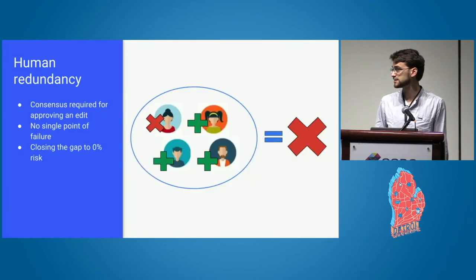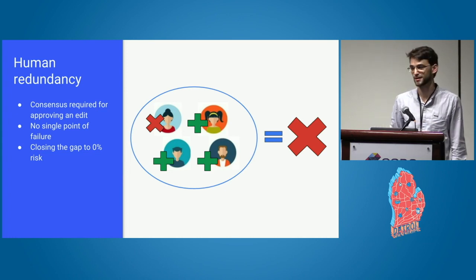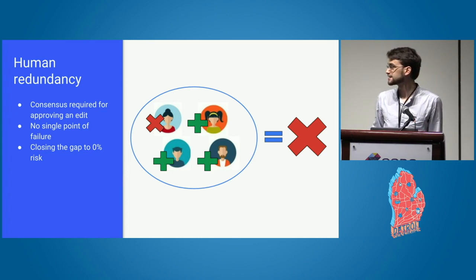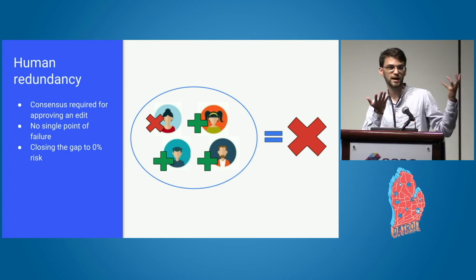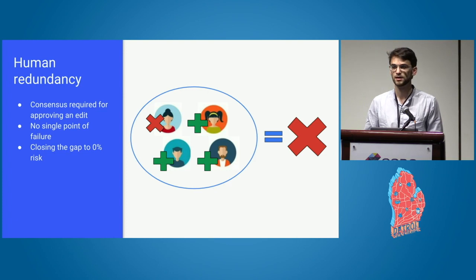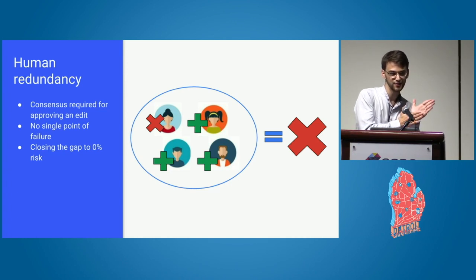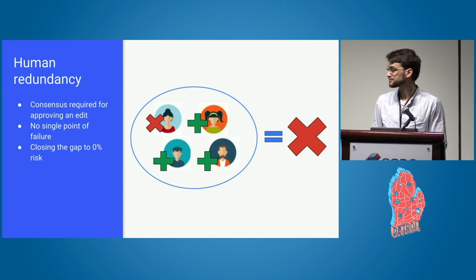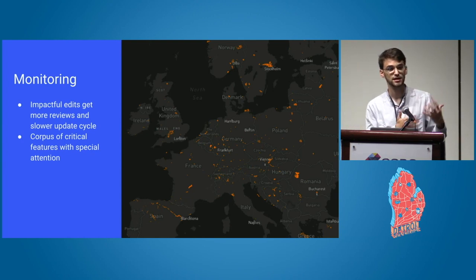We've since mitigated this and tested that it doesn't happen again. When there's a single human in the loop that can go wrong, you introduce process redundancy for everything bad that can happen. What we introduced is consensus voting that needs to go through for every edit. For an edit to get to our maps, four people have to agree it is good. If one person disagrees, that edit doesn't go through — and that also applies to the analyst stage. By this method, we get to 99.99% accuracy in detecting a bad edit.